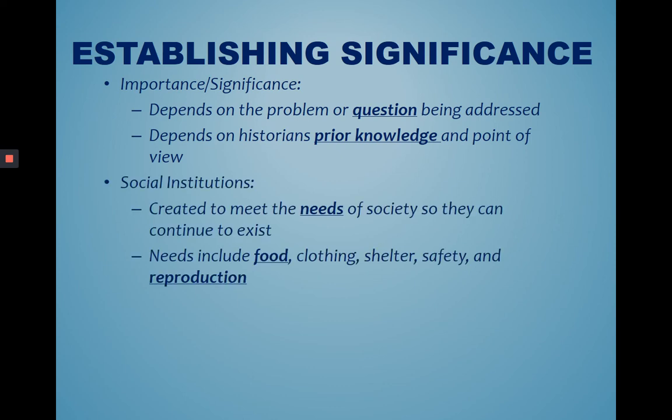Another tool that historians use are called social institutions. These institutions are created to meet the needs of society so they can continue to exist. These institutions include food, clothing, shelter, safety, and reproduction.